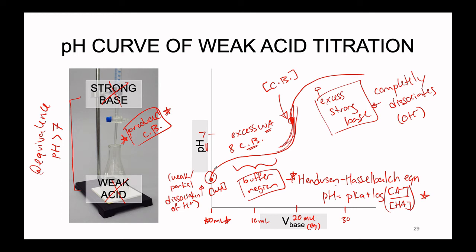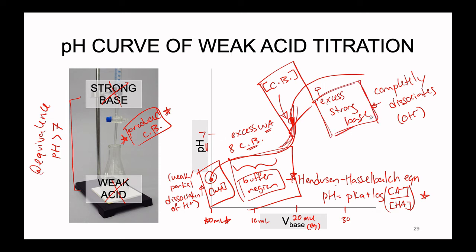Depending on where you are in the weak acid titration: if nothing has been added, use the weak acid concentration and an ICE table; if in the buffer region, use Henderson-Hasselbalch; at the equivalence point, use the conjugate base concentration; beyond the equivalence point, use the excess strong base. We'll now look at four calculations covering these four regions for the titration of a weak acid.